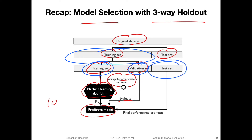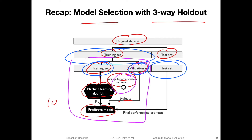Why do we have an independent test set here? Because when we change the hyper-parameters and evaluate many different models, there can be some selection bias if we select the best performing one based on this one validation set. In order to get a generalization performance estimate that is less biased, we would still use our independent test set.